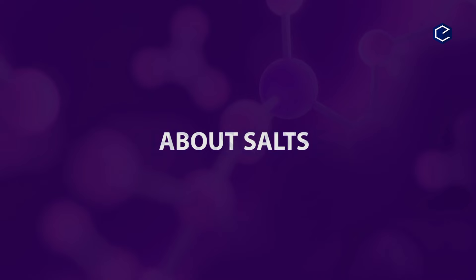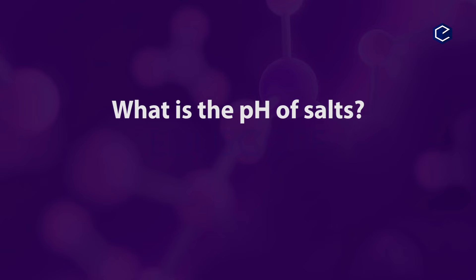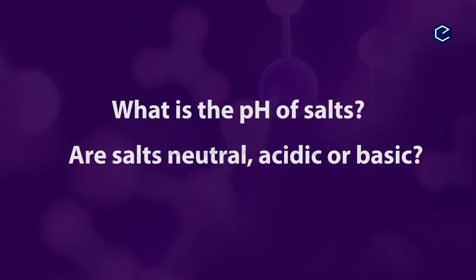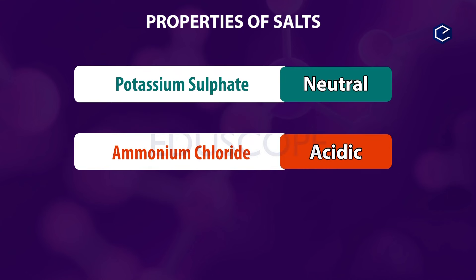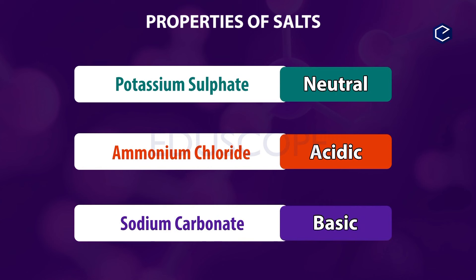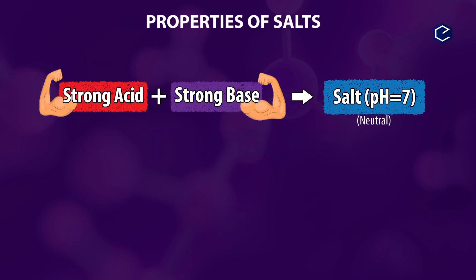Let us learn about Salts. What is the pH of Salts? Salts can be neutral, acidic, or basic in nature. Some salts are neutral, some are acidic, and some are basic. Salts of strong acid and strong base are neutral with a pH of 7.